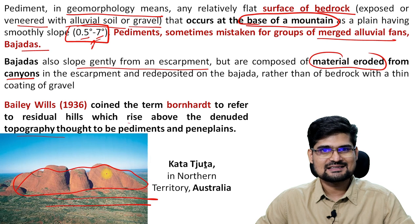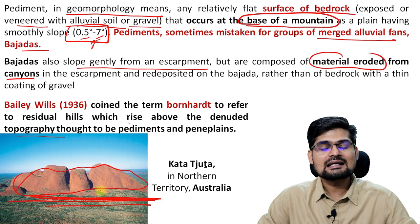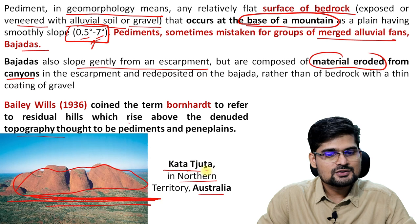These remnants — inselbergs or bornhardts — are very famous. Bornhardts are placed on the pediments. This particular feature you see in the Northern Territory of Australia — Uluru — is very famous.